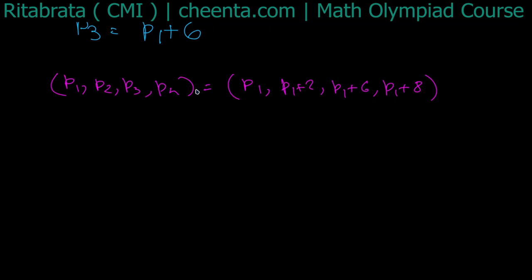What are the distinct possible values of p1 modulo 5? p1 cannot be 0 modulo 5 because p1 is prime greater than 5. p1 congruent to 1 means what? What becomes of this tuple modulo 5? This is 1, this is 3, this is 1 + 6 = 7, which is congruent to 2 modulo 5, this is 1 + 8 = 9, which is congruent to 4 modulo 5. And this is okay. Now primes can give these residues modulo 5. That's fine.